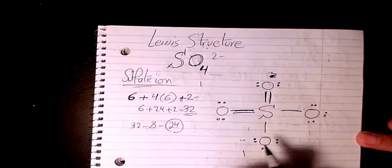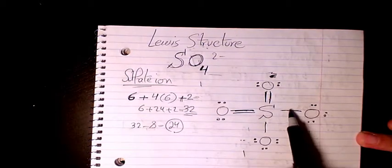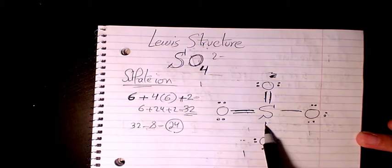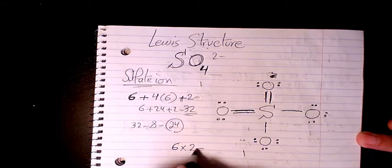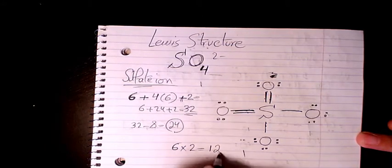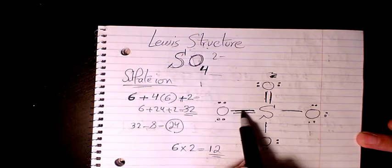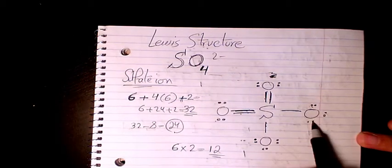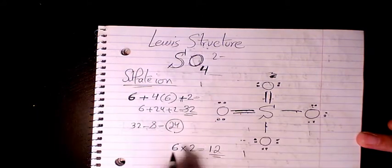Then we can check the octet rule. The octet rule for sulfur: we have 1, 2, 3, 4, 5, 6. As you see here, it's overfilled. We have 6 times 2 equals 12. For oxygen we have 2, 4, 6, and 8. 2, 4, 6, and 8. 2, 4, 6, and 8. And 2, 4, 6, and 8.